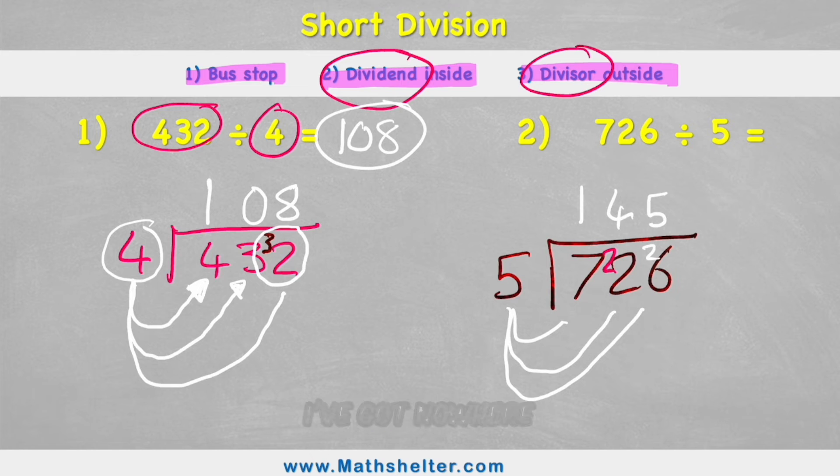But what do I do with my one left over? I've got nowhere to add it onto down here because there's no more numbers. So all I have to do is put a remainder one here on my answer line. So my answer to 726 divided by 5 is 145 with one remainder. Awesome. That's as easy as short division can be.